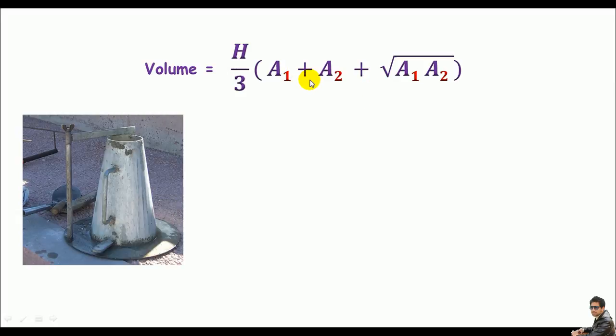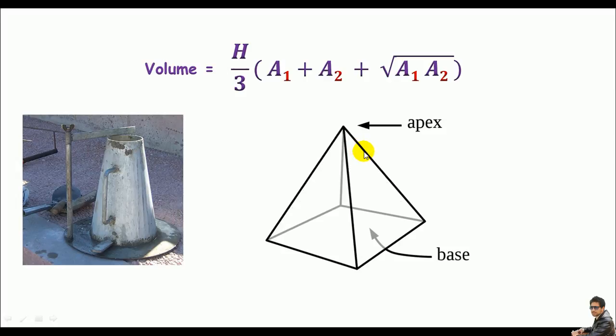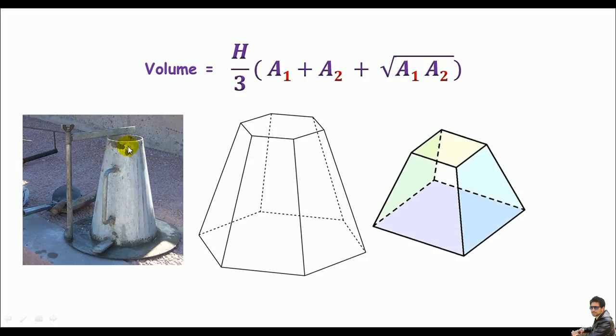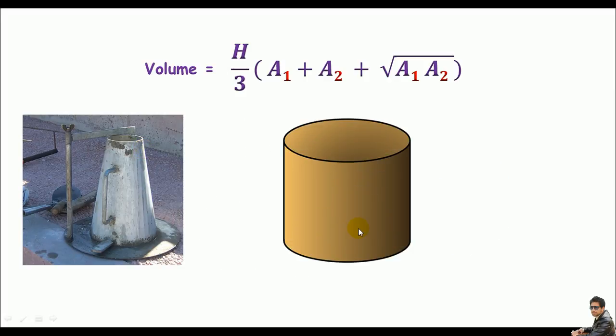The formula for this approach is h by 3 times a1 plus a2 plus square root of a1 and a2. This formula is not special for slumped cone, we can use it to determine the volume of pyramids, frustums of pyramids, frustums of cone, and cylindrical solids. The formula can be used for many other solids but I will not spend much time on all these.